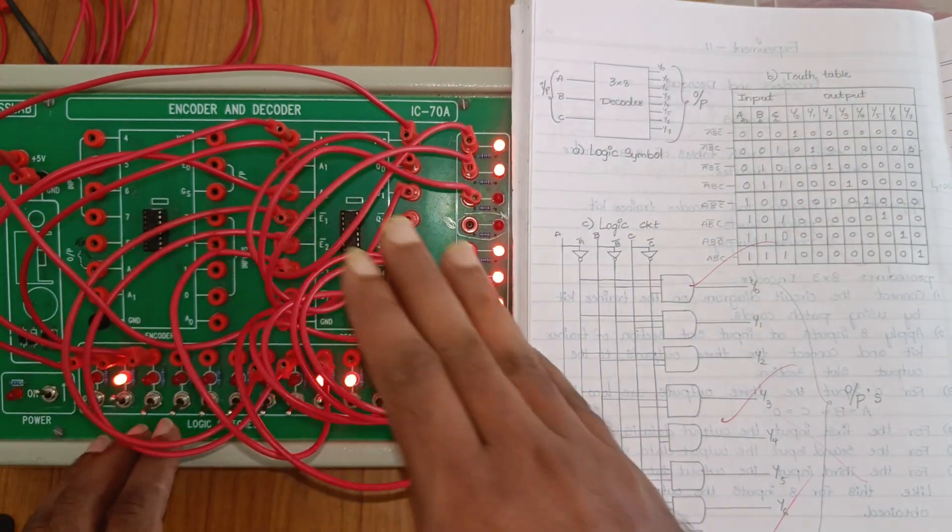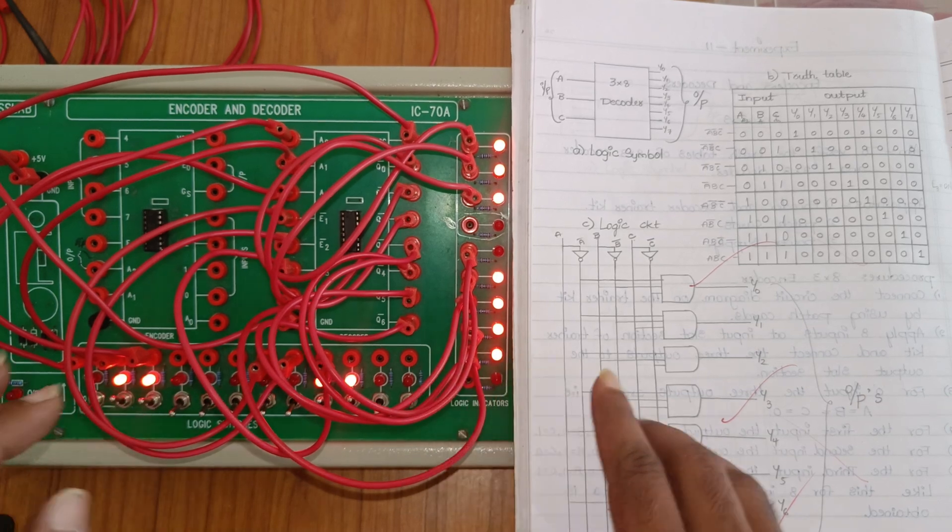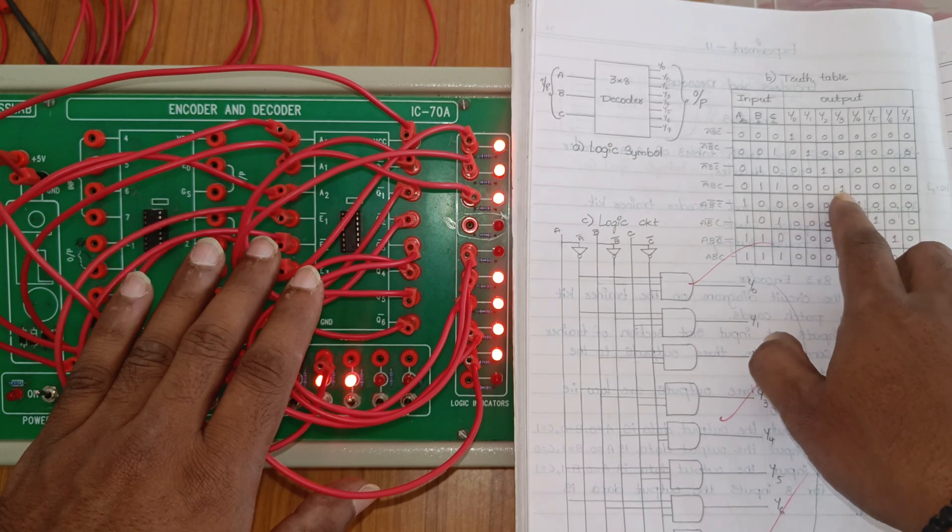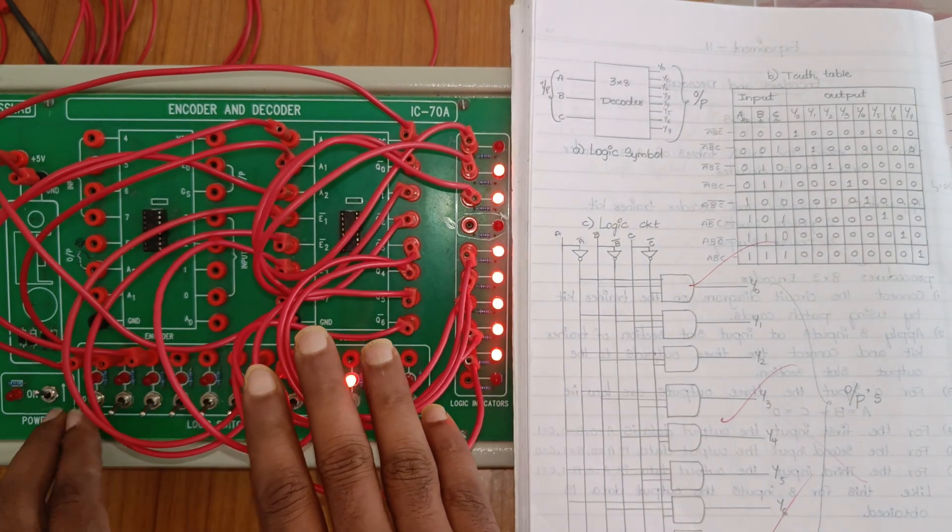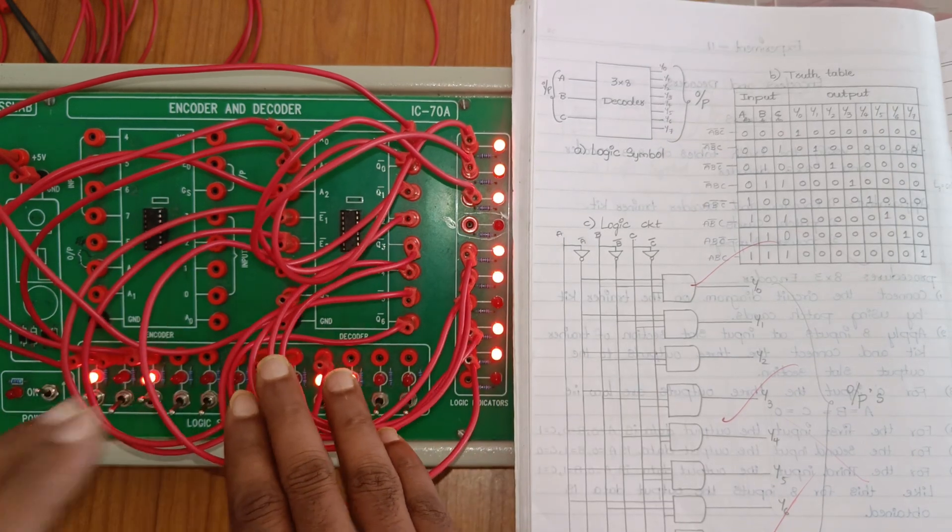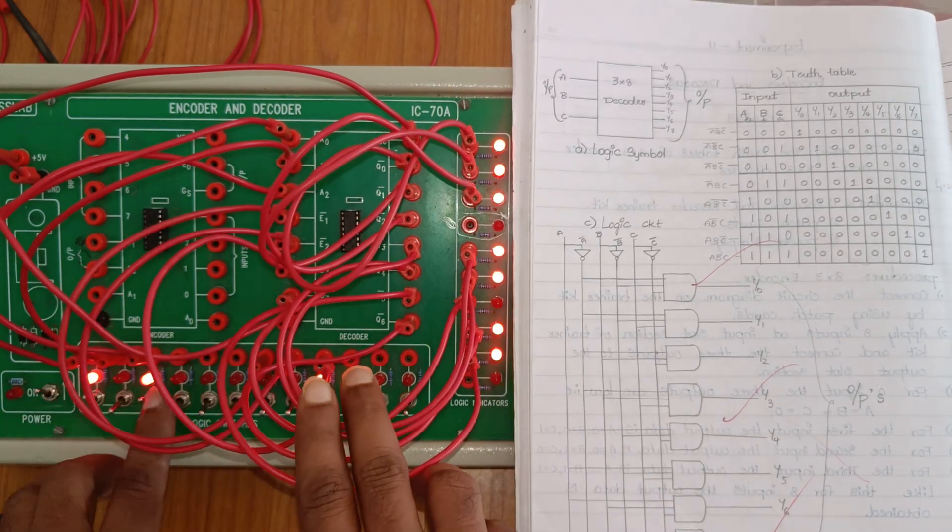Next, when we apply 011, Y3 data changes. For input 100, the next output changes. For 110, the sixth bit changes.